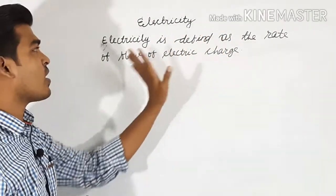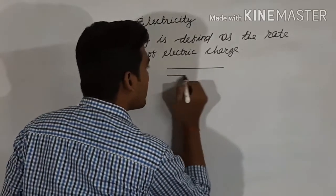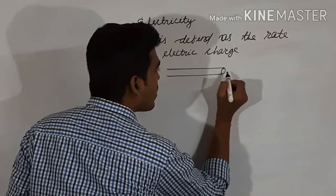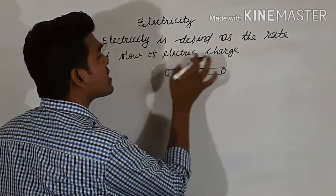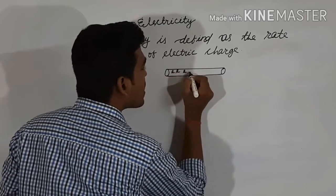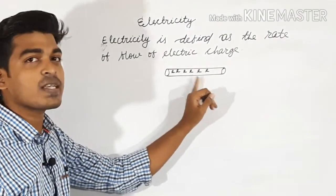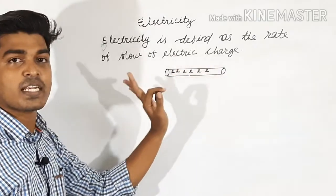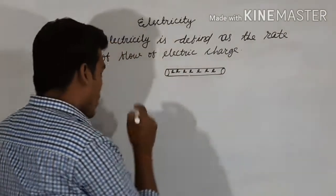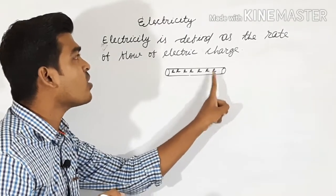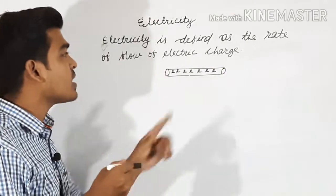Electricity is defined as the rate of flow of electric charge. Let me explain with a diagram — here I am drawing a metallic conductor. Inside this metallic conductor, electric charge will flow. Electric charge means electrons. I will sometimes use 'electric charge' and sometimes 'electrons' interchangeably. The charge of an electron is negative, and these electrons move inside the conductor, causing electricity to flow.